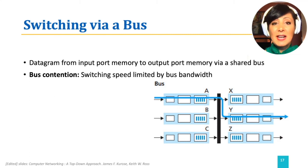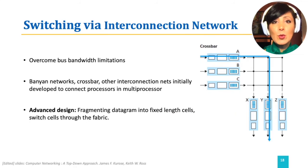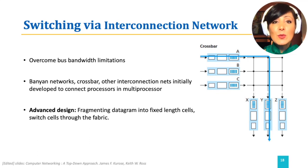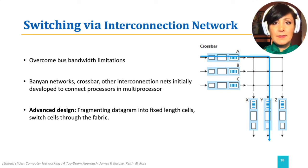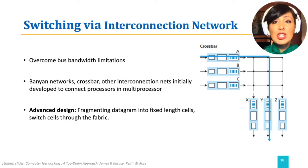Switching via an interconnect network overcomes the problem faced in switching via bus, which was caused by waiting for a shared resource — the bus. It uses a crossbar switch using two N buses connecting N input ports to N output ports. A switch at the crosspoint of the bus from input A to output B would open and close to determine the switching from the input port to the output port.